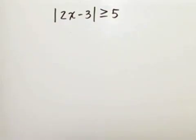Let's solve the absolute value inequality in two different ways. First, we'll use the boundary point method, then we'll use equivalent absolute value equations.